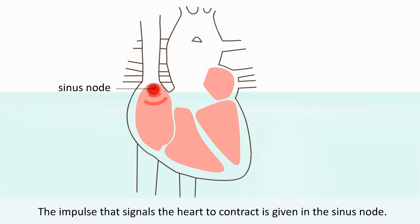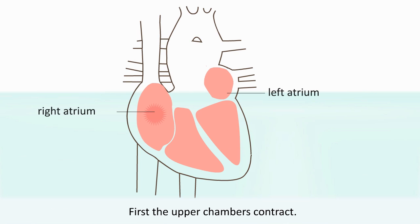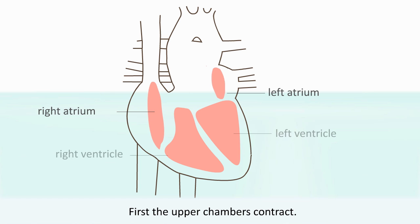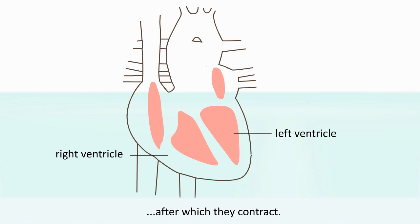The impulse that signals the heart to contract is given in the sinus node. First the upper chambers contract. Then with a slight delay, the impulse travels to the lower chambers, after which they contract.